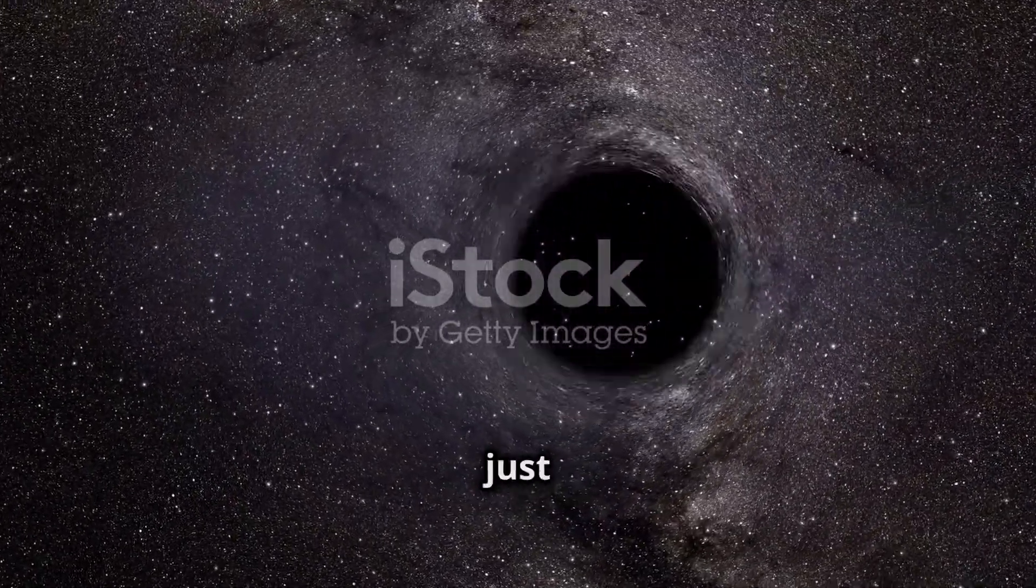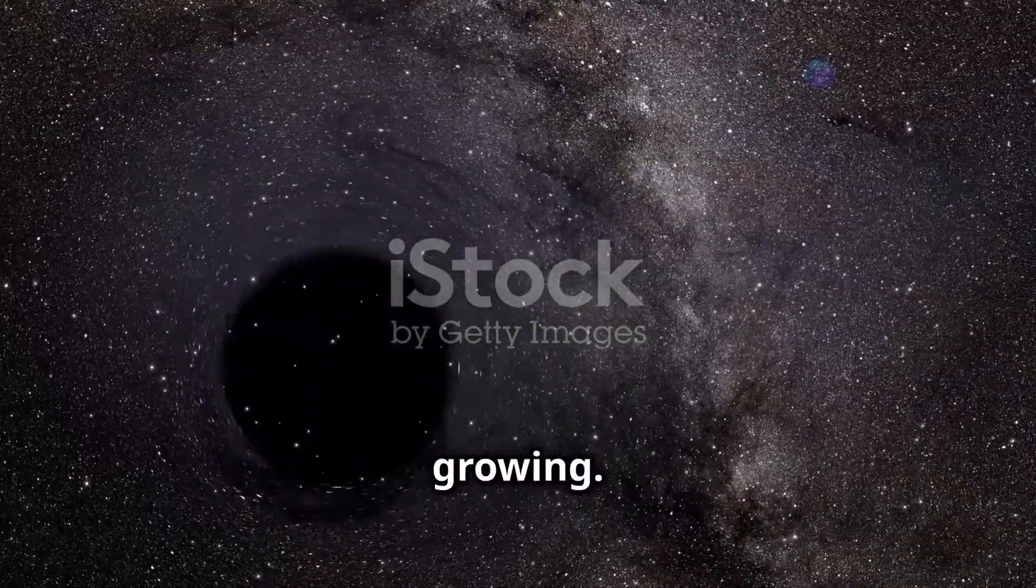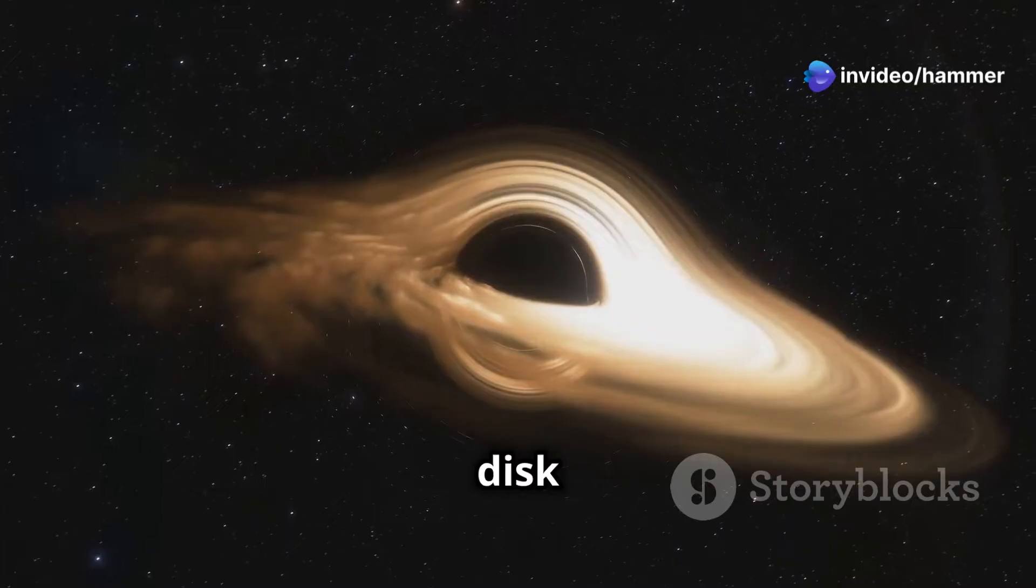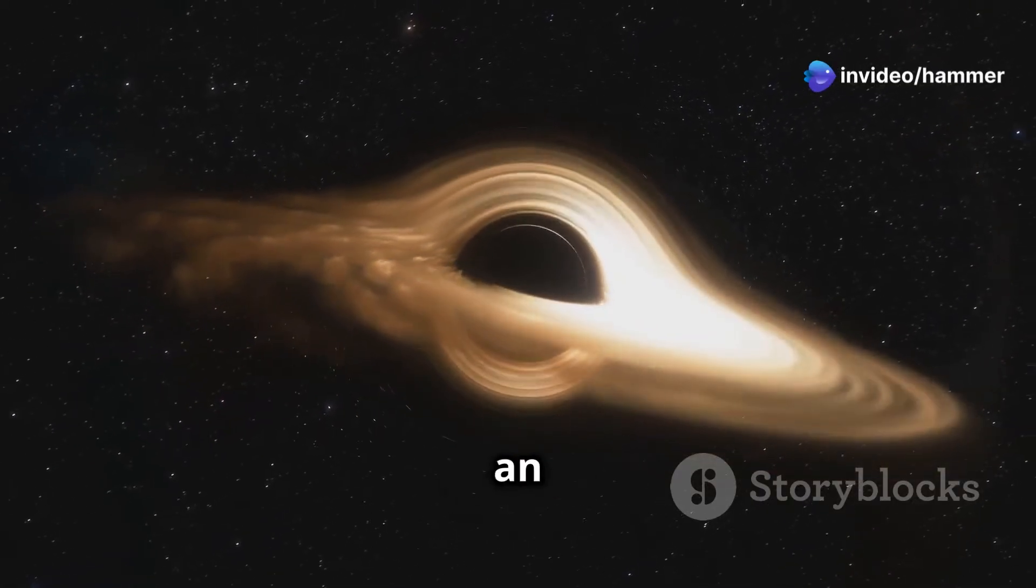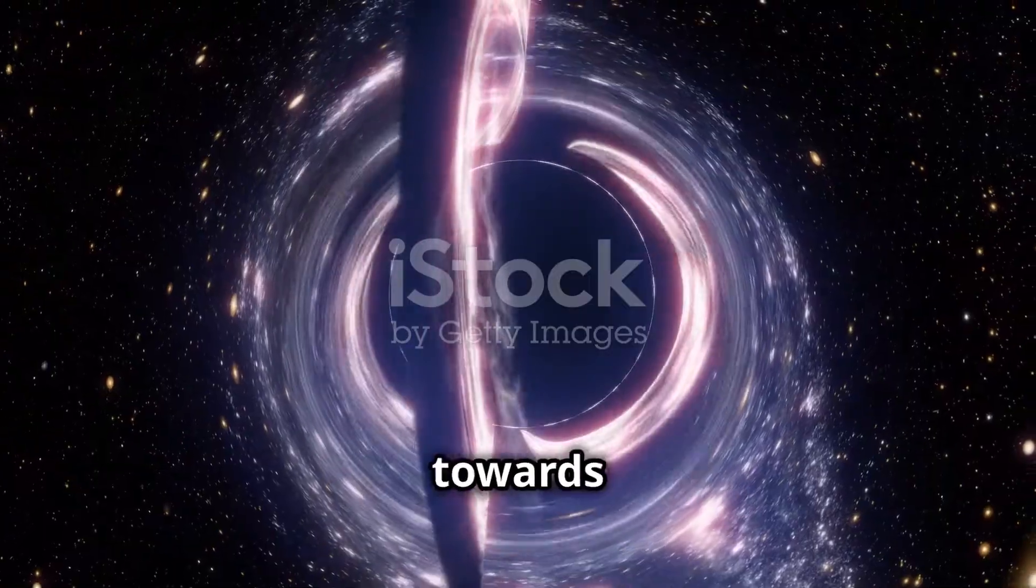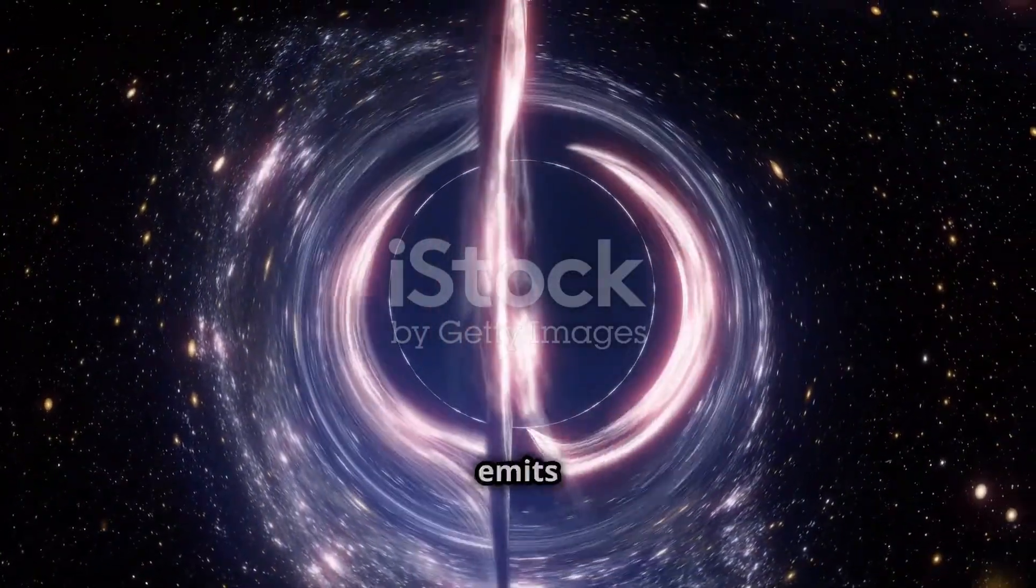This black hole is not just massive, it is also actively growing. The JWST observations show that it is surrounded by a disk of gas and dust, known as an accretion disk. As material from the accretion disk spirals inward towards the black hole, it heats up and emits light.